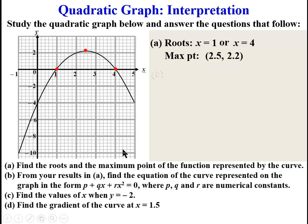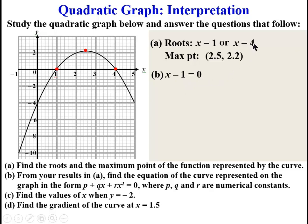Now we go to problem B. From your results in A, find the equation of the curve in the form P plus QX plus RX squared equals 0, where P, Q and R are numerical constants. From the roots, we can form two factors: X minus 1 equal to 0 or X minus 4 equal to 0. Taking 1 to this side, we have X minus 1 equal to 0, and taking 4 to the left-hand side, X minus 4 equal to 0.